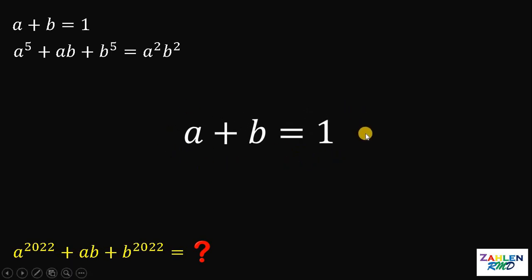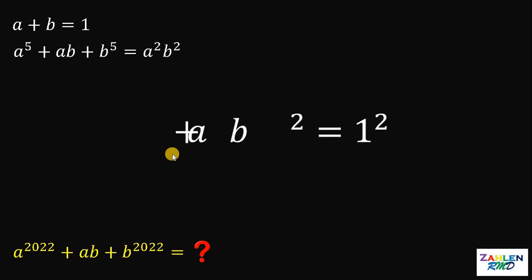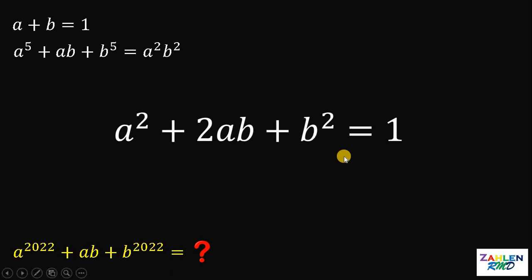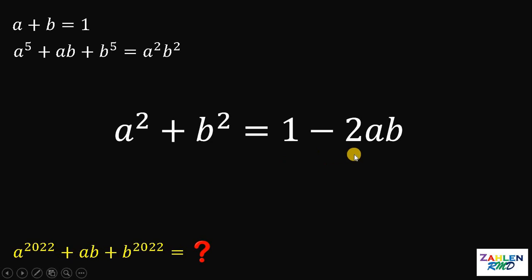Using the first equation, we need to manipulate it. We square both sides: a plus b quantity squared equals 1 squared, which is 1. Expanding gives a squared plus 2ab plus b squared equals 1. Subtracting 2ab from both sides gives us a squared plus b squared equals 1 minus 2ab.